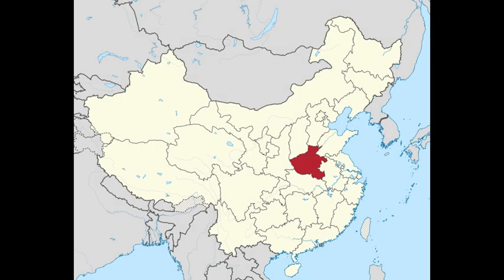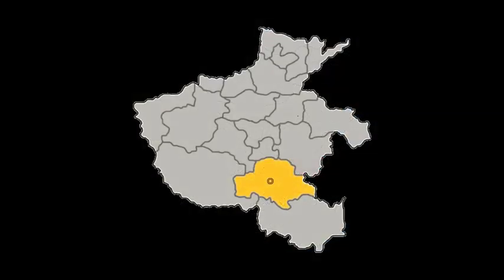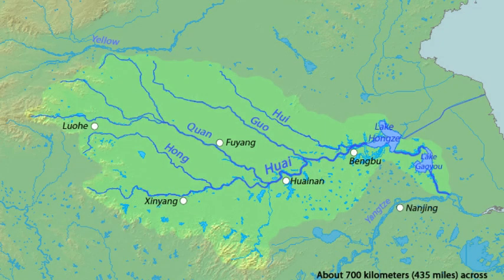The disaster took place in central China, in the Zhu Ma Dian Prefecture of Henan Province. The two major rivers there are the Hong and the Ru rivers, which both pour into the Huai River, which in turn flows into the mighty Yangtze. The government built the Banqiao Dam in 1952 on the Ru River to help control floods. After a second renovation four years later, engineers felt confident it could sustain a thousand-year flood.